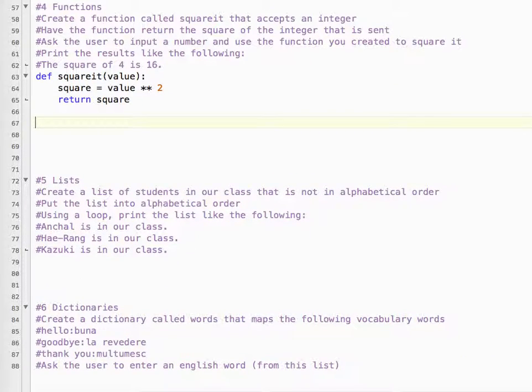Okay, so we defined it. Now we need to ask the user to input a number. So say number equals raw_input. Please enter a number.